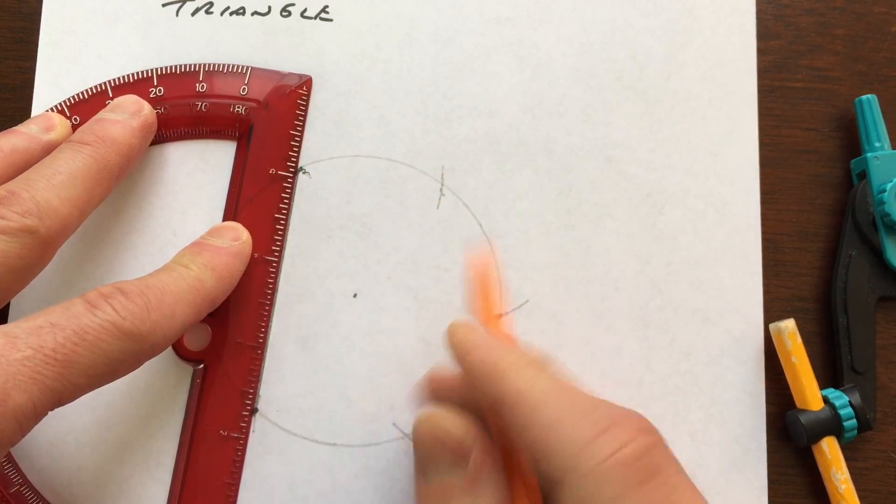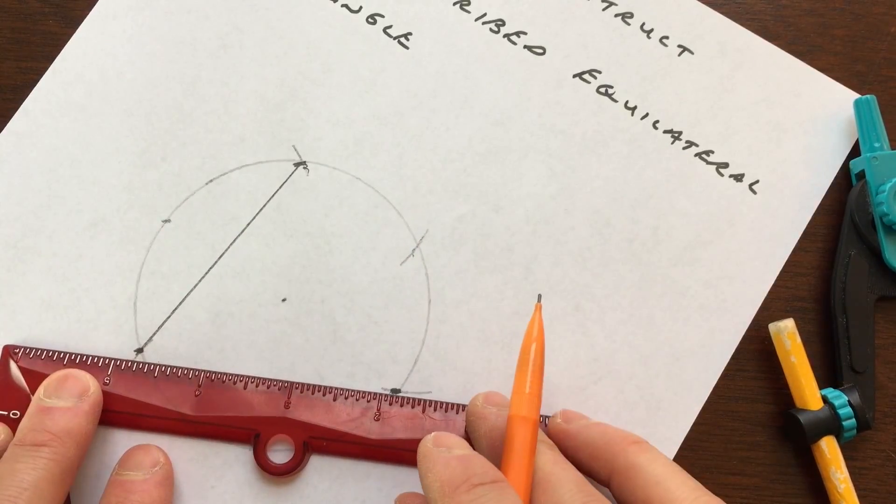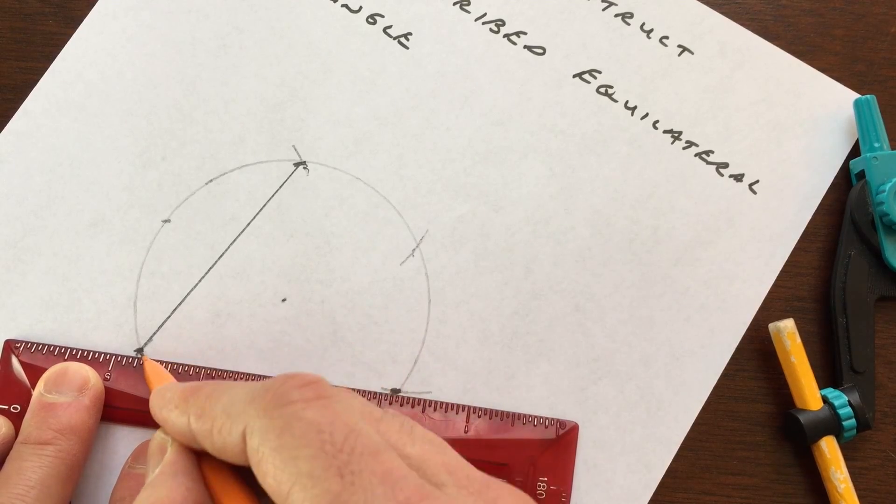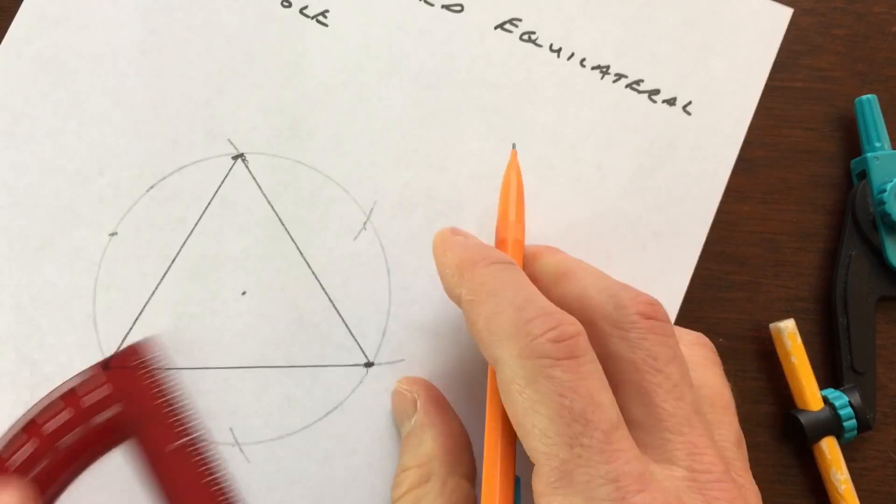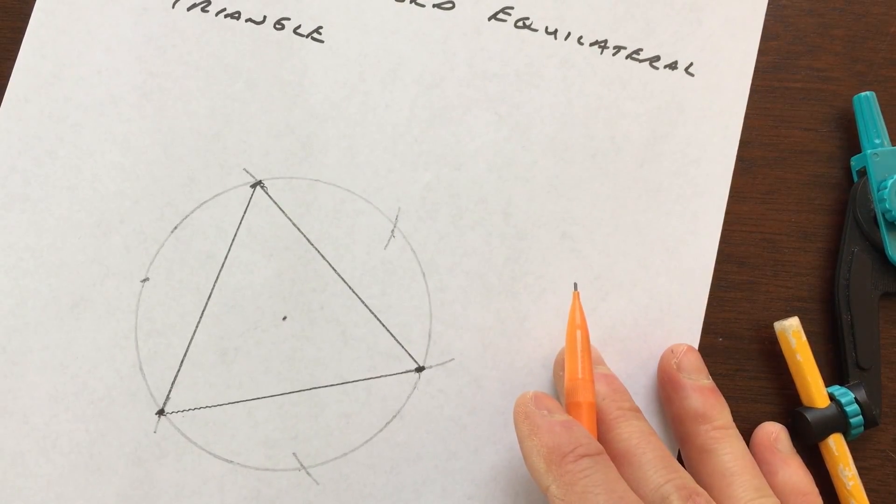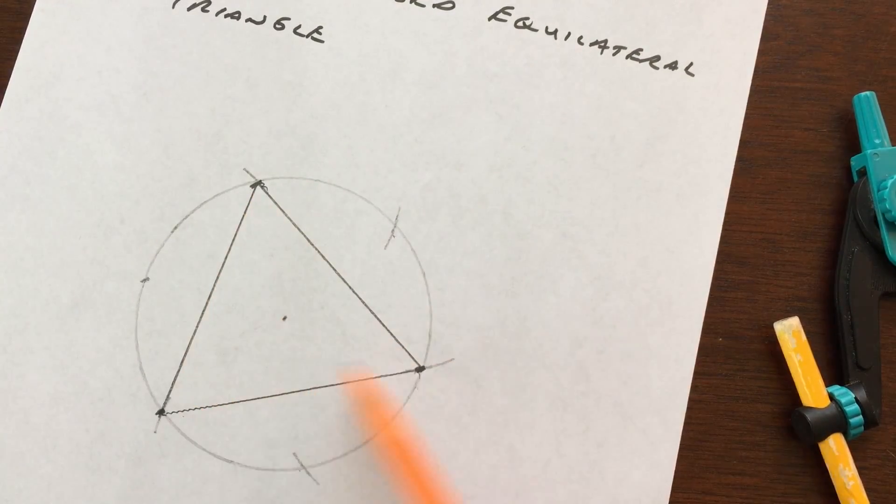Let's go ahead and do that right now. One, two, and three. You can see it came out pretty accurate, and you can see this is an equilateral triangle.